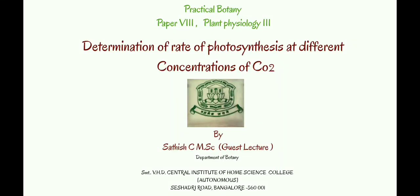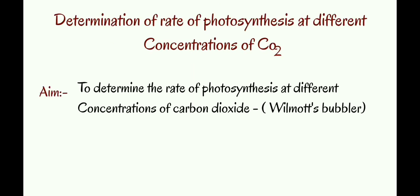Today we are going to see an experiment from practical botany, Paper 8: Plant Physiology — that is, determination of rate of photosynthesis at different concentrations of CO2. Our aim is to determine the rate of photosynthesis at different concentrations of carbon dioxide using an apparatus called Wilmert's bubbler, as we are familiar with from our previous experiment on the rate of photosynthesis at different wavelengths of light.